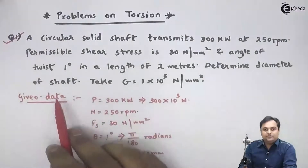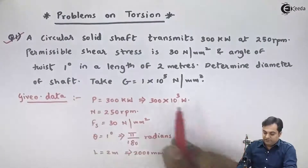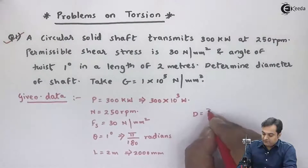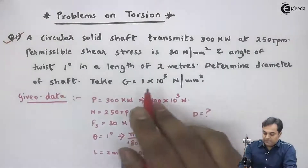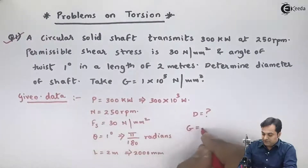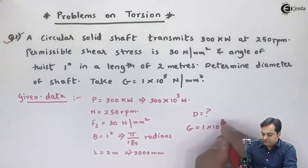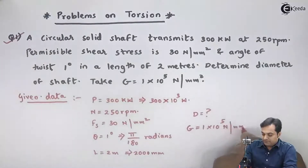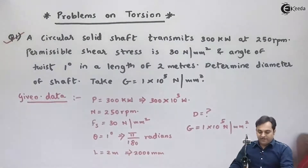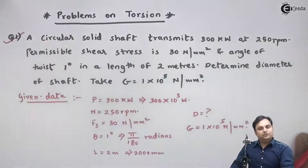We have to determine the diameter of the solid shaft. G, the modulus of rigidity, is given as 1 into 10 raised to 5 newton per millimeter square. Now let us try to solve this problem.